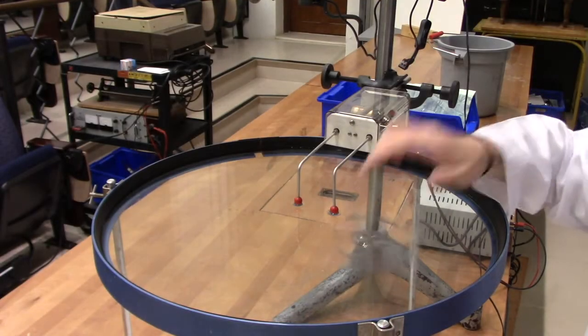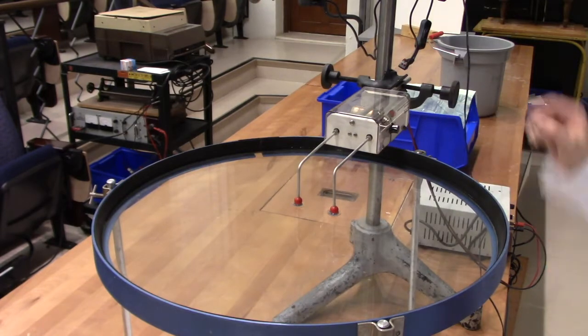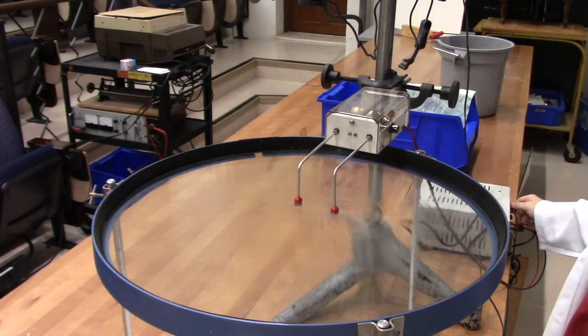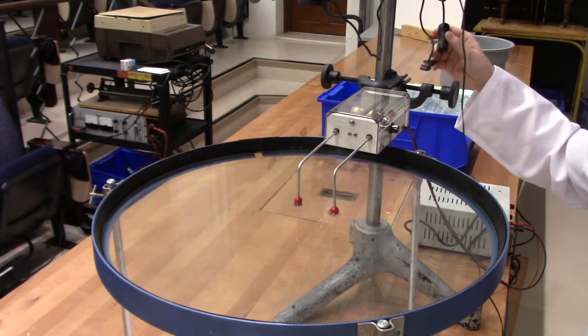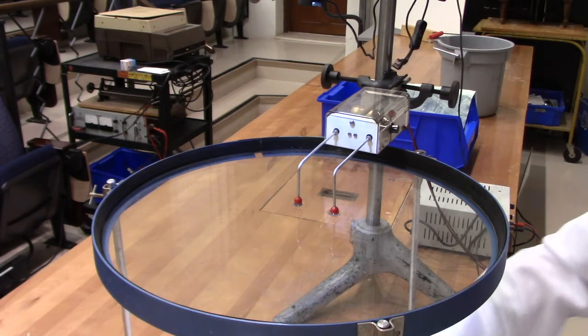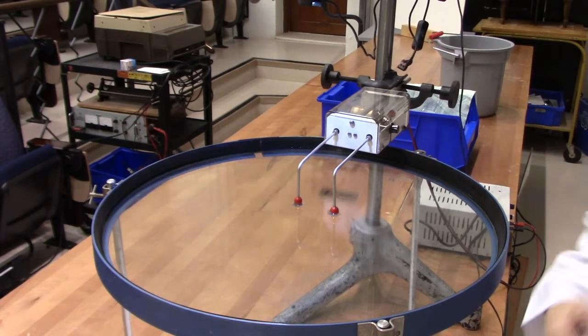Here we have a shallow pool of water. I have two ripple generating bulbs sticking into it that are attached to a motor. We'll shine a light from above and on this paper below we'll be able to see the wave pattern.